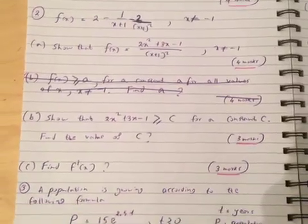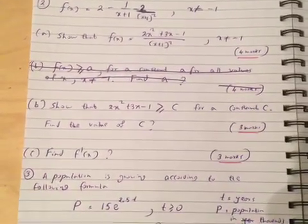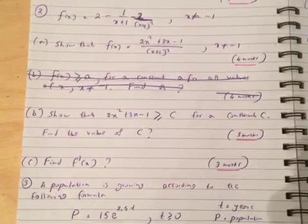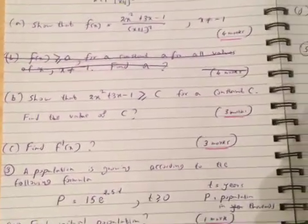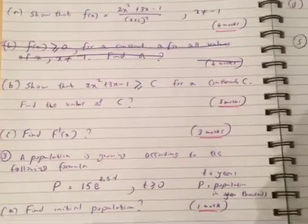And part b: Show that 2x squared plus 3x minus 1 is greater than or equal to C for a constant C. Find the value of C. And question C: Find f dash of x.